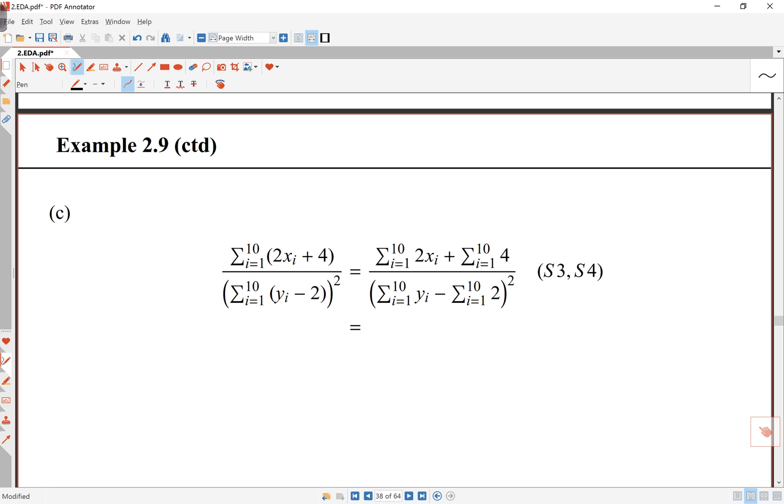and the 2x's plus 4, I can break this up. So first of all, look at the 2x's, there it is, 2x's, and then look at the sum of the 4's, that's separate. In the bottom here, again I've got the yi minus 2 here, so look at the yi's first, and the sum of the 2's, and the square goes afterwards.